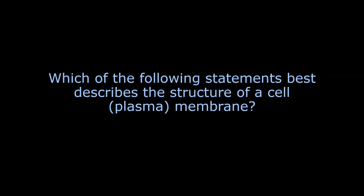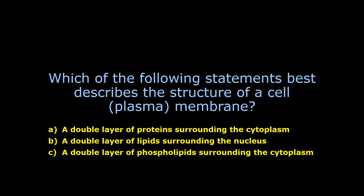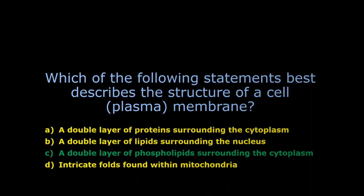Which of the following statements best describes the structure of a cell membrane? We know it's got a phospholipid bilayer. It's got proteins embedded in it. A double layer of protein? No, it's phospholipid double layer. A double layer of lipids surrounding the nucleus? No, that's the nuclear envelope. Double layer of phospholipids surrounding the cytoplasm. Wow, that sounds good. Intricate folds found within mitochondria? That's cristae. So it's got to be C, and it is.